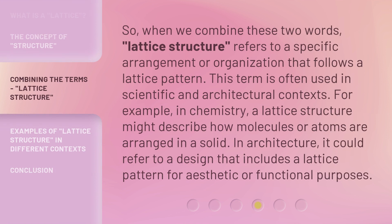So, when we combine these two words, lattice structure refers to a specific arrangement or organization that follows a lattice pattern. This term is often used in scientific and architectural contexts. For example, in chemistry, a lattice structure might describe how molecules or atoms are arranged in a solid. In architecture, it could refer to a design that includes a lattice pattern for aesthetic or functional purposes.